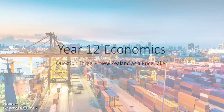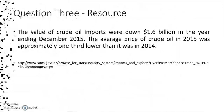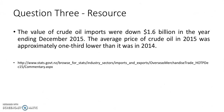Here we are at the third question from the recent trade test. This time we're looking at using the price taker model, also known as the one country model, examining both the exporter and importer case. The resource is important here - it gives data that crude oil imports are down 1.6 billion, which is quite significant compared to 2014. You'll need to keep that in mind when starting the next questions.